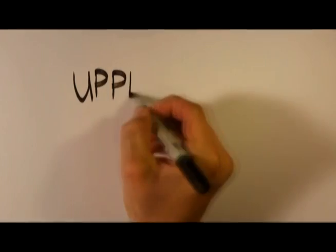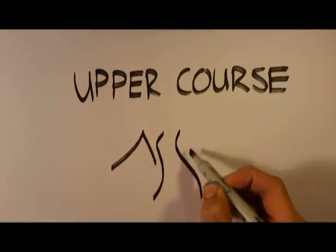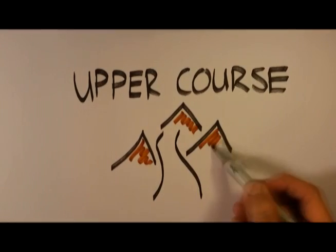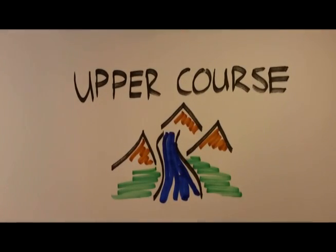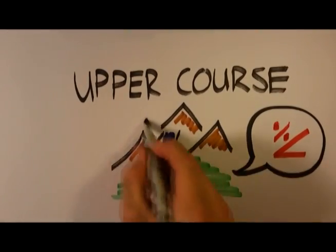First is the upper, or the mountain course, where the river originates. Here the velocity of the river is faster due to the steep gradient. The floor of the valley is narrow and the valley is V-shaped.